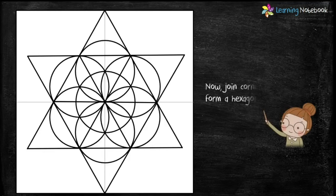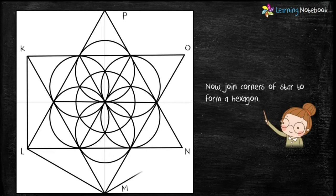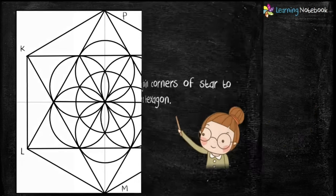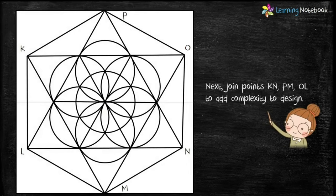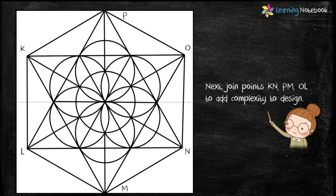Next, join the corners of the star, that is K, L, M, N, O, P to form a hexagon. After that join points K, N, P, M, O, L to add complexity to the design.